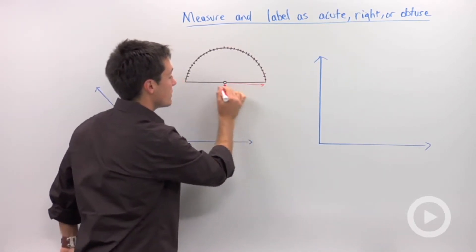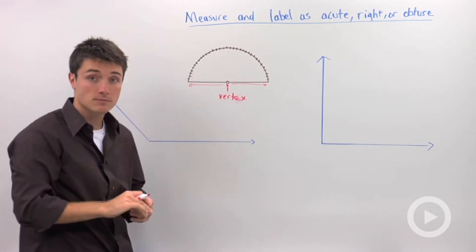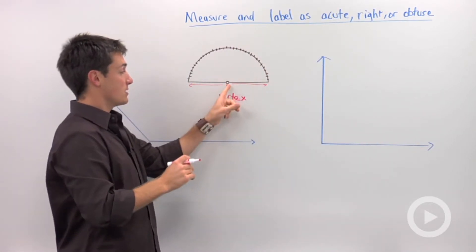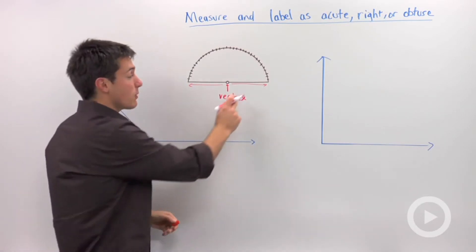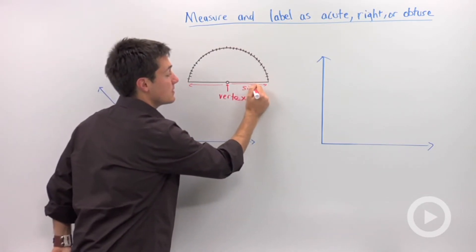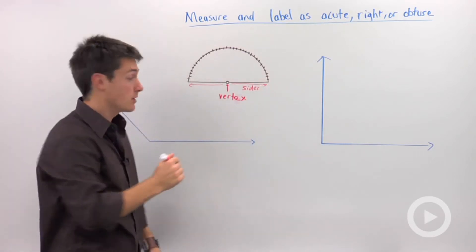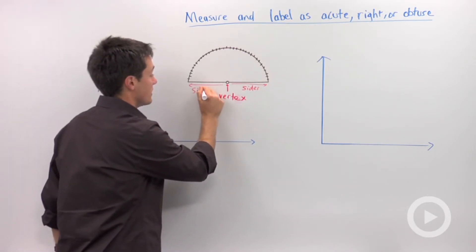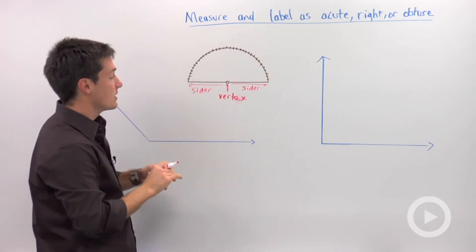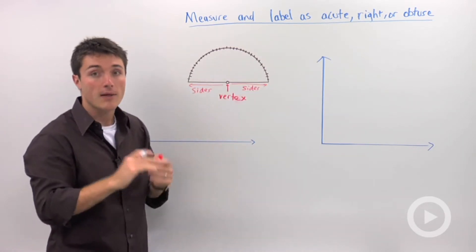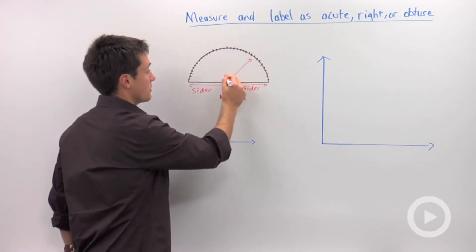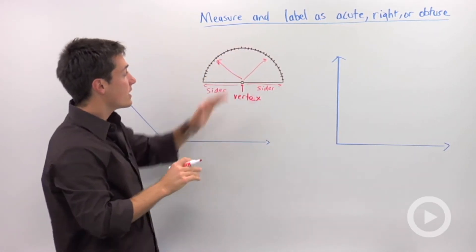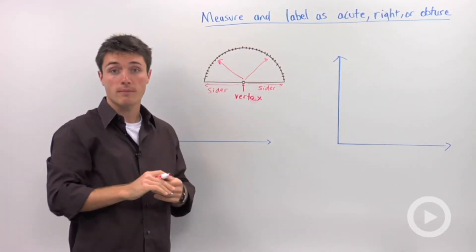And then along one of these two bases, so either the distance between the center and the edge over here, or the center and the edge over here, that is where one of the sides of your angle is going to go. So you're going to have one of your sides and the vertex all lined up. And then you're going to have some sort of ray that's going to extend all the way so that you can get a measure.